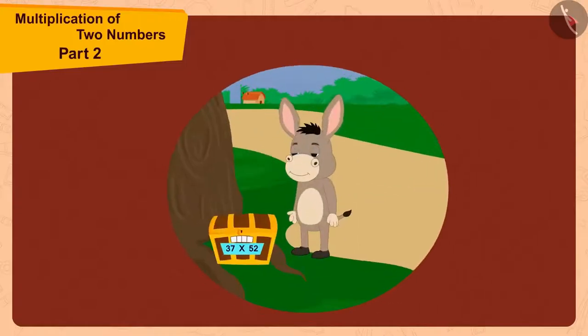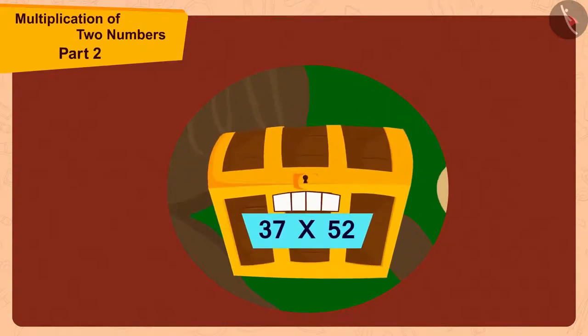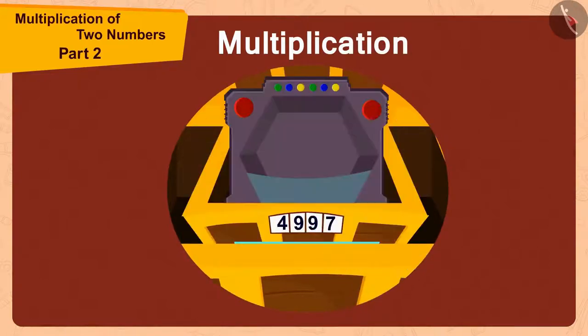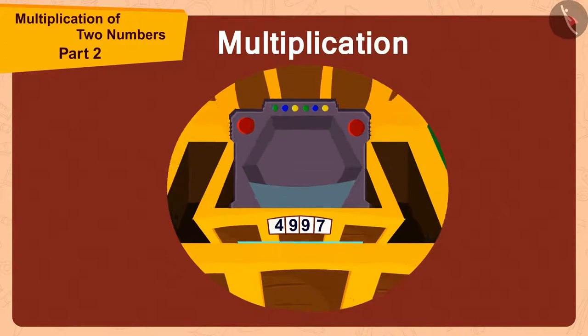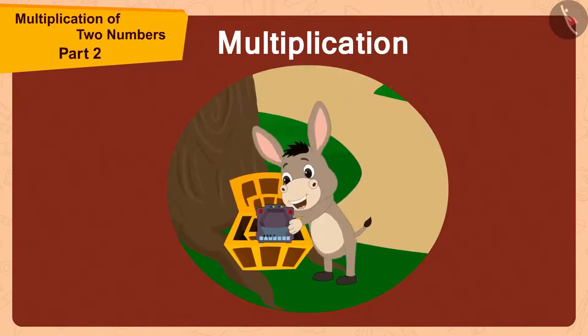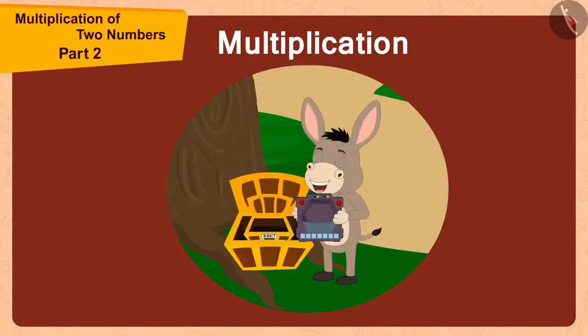In the previous video we saw how Bhola opened the codes of the boxes using multiplication and found a unique toy from the small box. Now let's see what is unique about this toy.